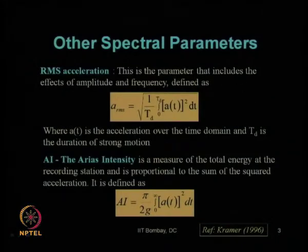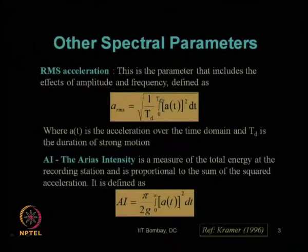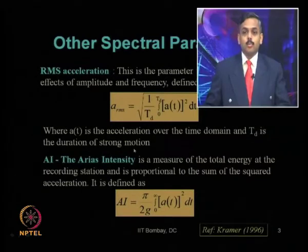We have discussed various spectral parameters, like root mean square acceleration. ARMS is the root over the mean of the square — the acceleration time history function squared, integrated over 0 to t_d, divided by t_d, the duration. Here, a(t) is the acceleration over the time domain and t_d is the duration of the strong motion.